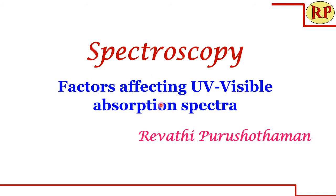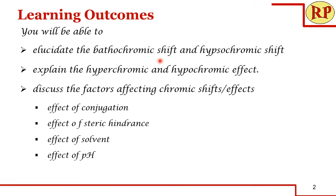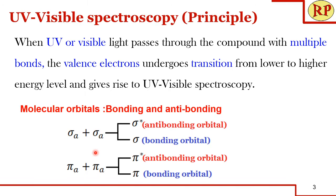Welcome to another session of spectroscopy. In this session we'll understand the factors affecting UV-visible absorption spectroscopy. At the end of the session you'll be able to elucidate the bathochromic shift, hypsochromic shift, hyperchromic effect and hypochromic effect, and factors affecting the chromic shifts — that is, effect of conjugation, steric hindrance, solvent, pH, etc.